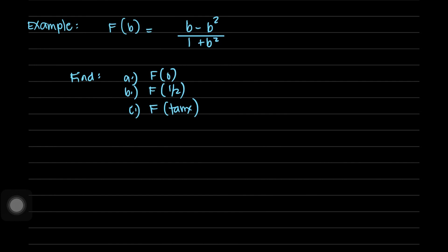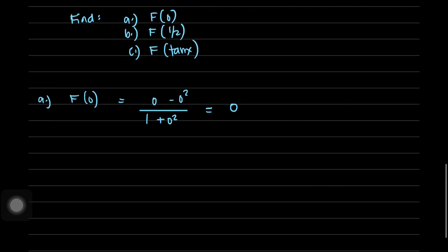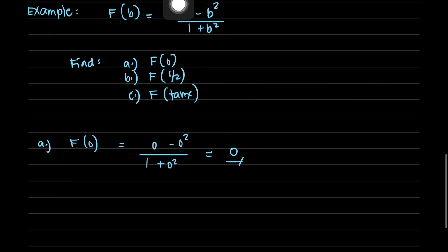Another example: given f(b) = (b - b²) / (1 + b²), find f(0), f(1/2), and f(tan x). For part (a), f(0): substituting b = 0 gives (0 - 0²) / (1 + 0²) = 0 divided by 1 = 0. So f(0) = 0.